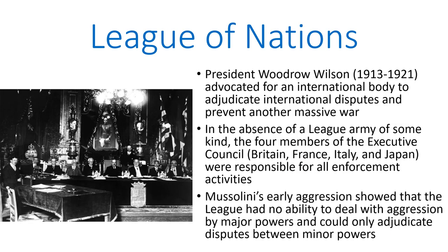While the League of Nations was the brainchild of Woodrow Wilson, neither he nor the United States would end up being involved in its operation. This body was supposed to adjudicate international disputes and prevent another massive war. However, it would quickly prove to be ineffective and fundamentally flawed. The League lacked any sort of central structure, and there also was no combined force that existed outside of the member states — the League was more of a meeting place than a physical institution with its own prerogatives. In the absence of a League army, the four members of the Executive Council — Britain, France, Italy, and Japan — were responsible for all enforcement activities on their own and under their own banners.